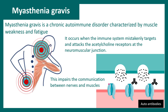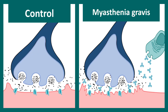Now let's talk about things that can go wrong at the neuromuscular junction. One disease is myasthenia gravis, a chronic autoimmune disease characterized by weakness and muscle fatigue. It occurs when the immune system mistakenly targets the acetylcholine receptors and disrupts the neuromuscular junction. Here the control side shows normal release of acetylcholine from the nerve terminal.